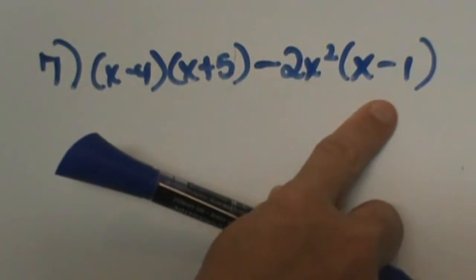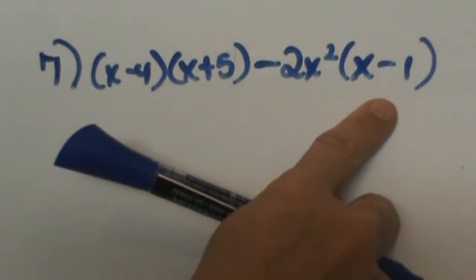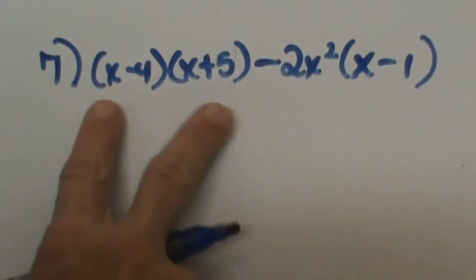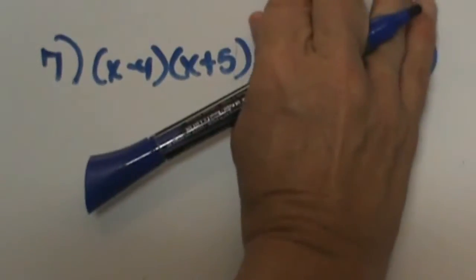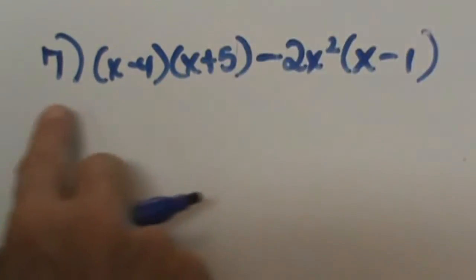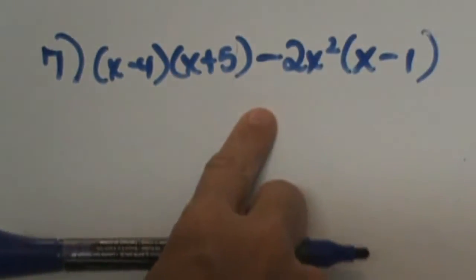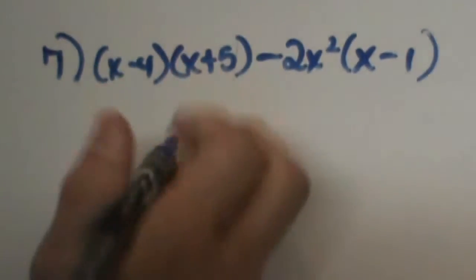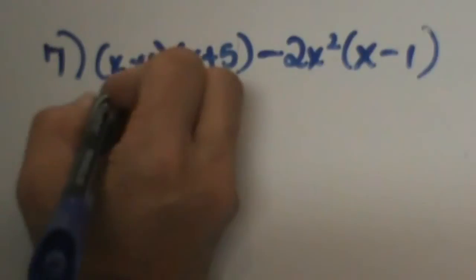What we are going to do is first treat it like two separate problems. I am not going to deal with the second part yet — I am just going to FOIL the first part.